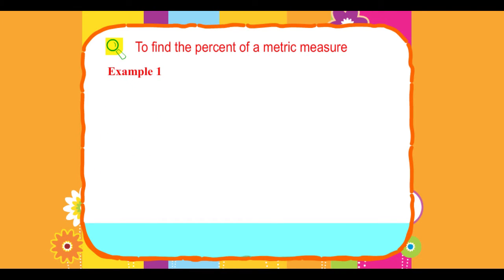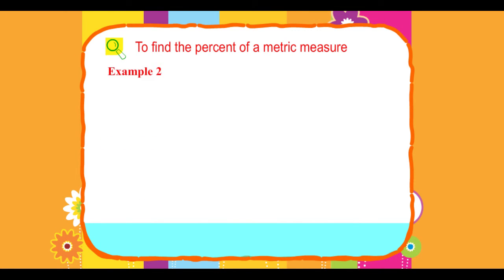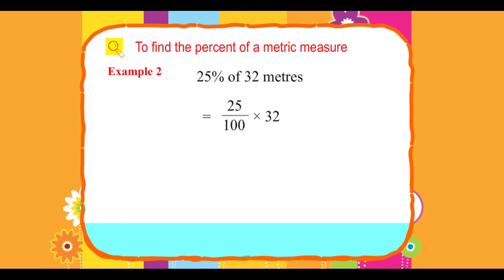Example 1: 75% of 80 meters equals 75 upon 100 into 80 equals 60 meters. Example 2: 25% of 32 meters equals 25 upon 100 into 32 equals 8 meters.